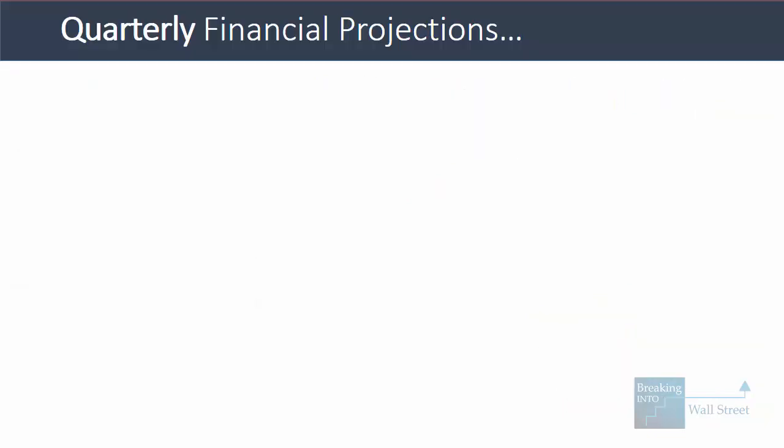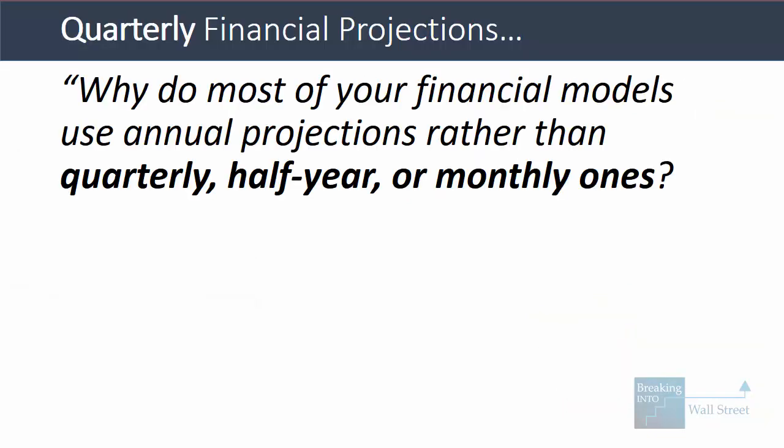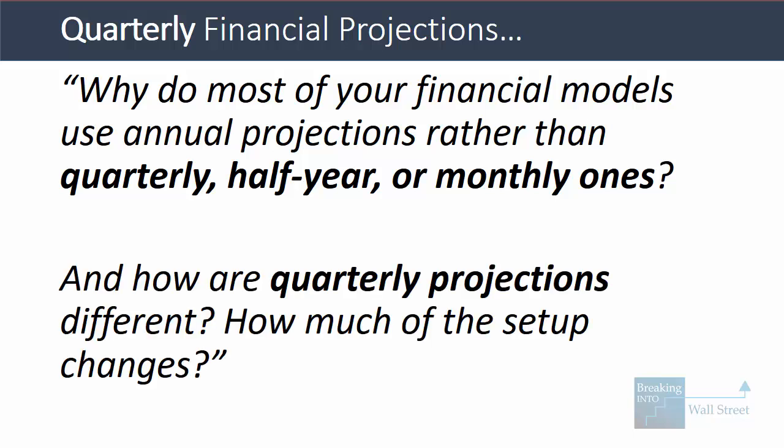Here's the question that came in the other day: why do most of your financial models use annual projections rather than quarterly, half-year, or monthly ones? And how are quarterly projections different? How much of the setup changes?